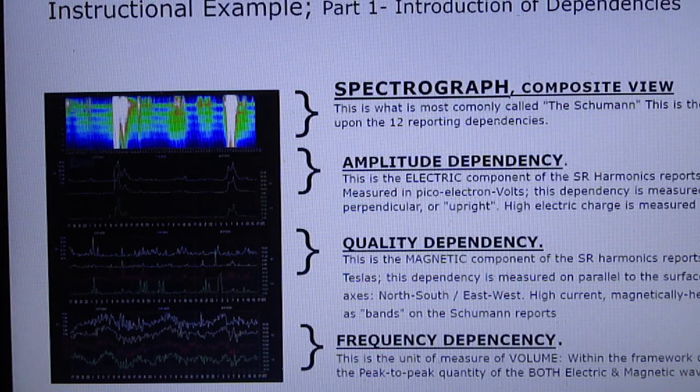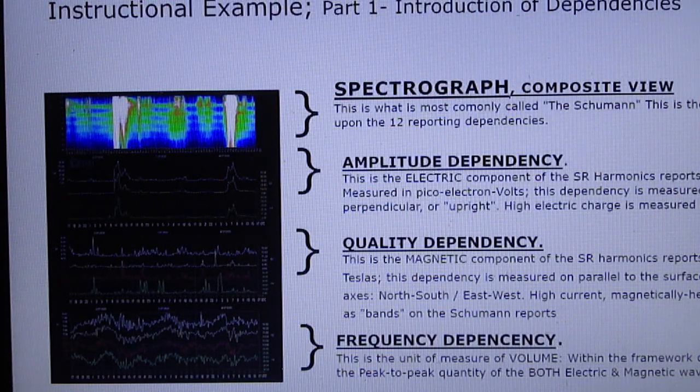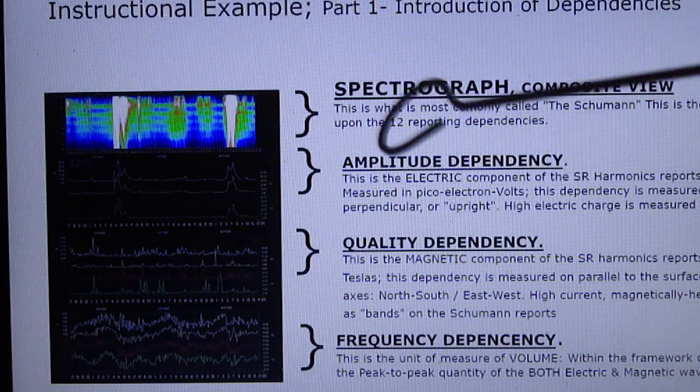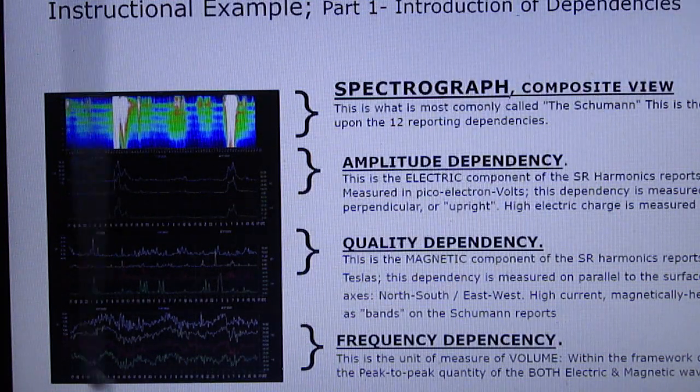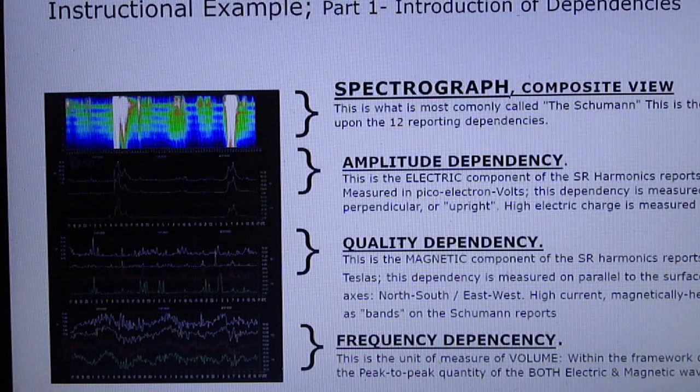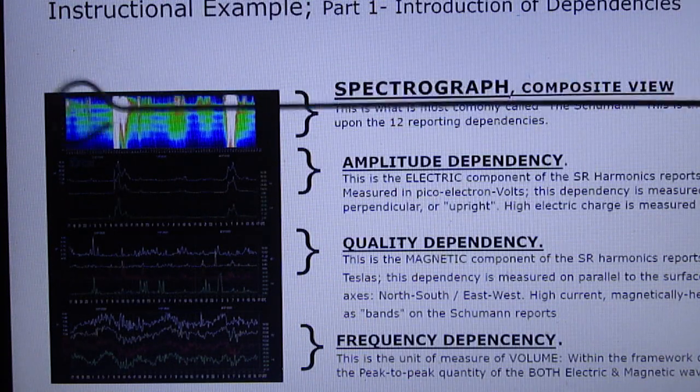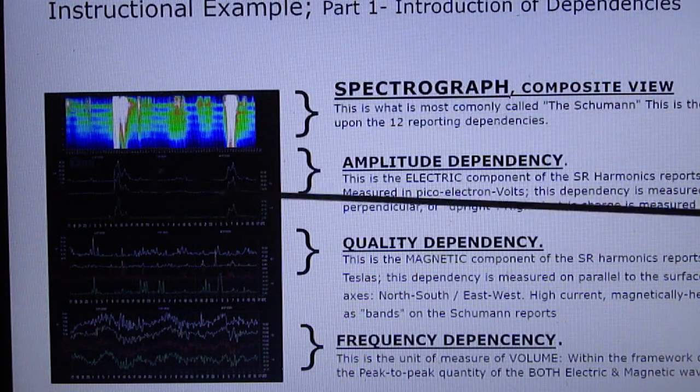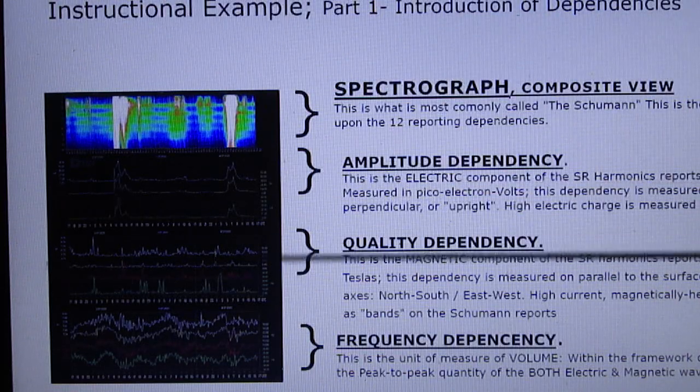All right, so let me get into it right now. So what we are looking at here, this whole part right here is this is the spectrograph, what everyone calls a Schumann. This is the amplitude dependency, this is the quality dependency, and this is the frequency dependency.